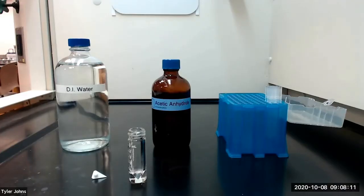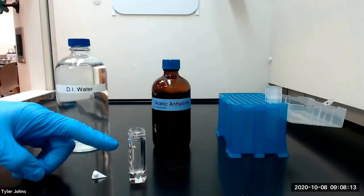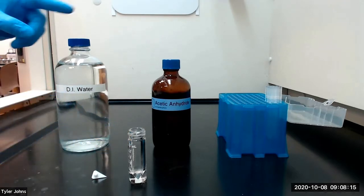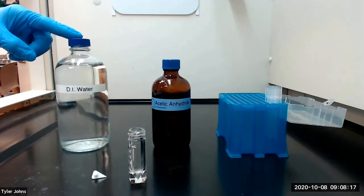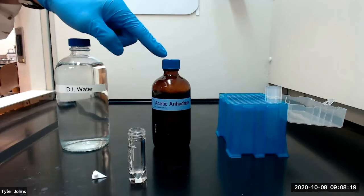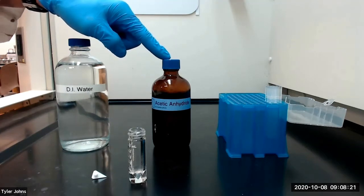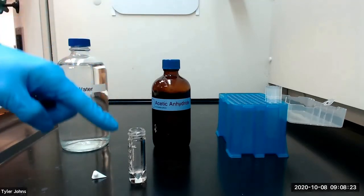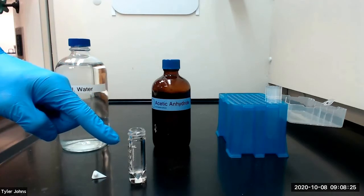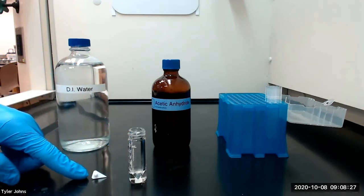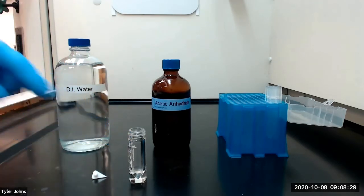We've transferred our P-aminophenol to our 5-milliliter conical vial. We're next going to add 450 microliters of deionized water and 165 microliters of acetic anhydride to the P-aminophenol in our 5-milliliter conical vial. We will also add a spin vane to our conical vial.